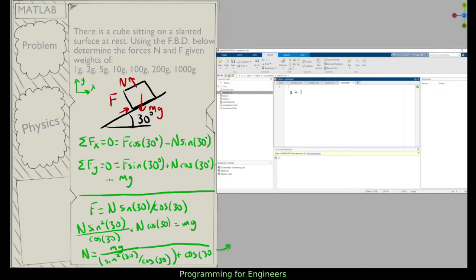And then I can plug this back in, F is this times sine of 30 over cosine of 30. So I was able to solve this by hand. Now what is the utility of MATLAB here? Well, I can let it perform the calculations for me.